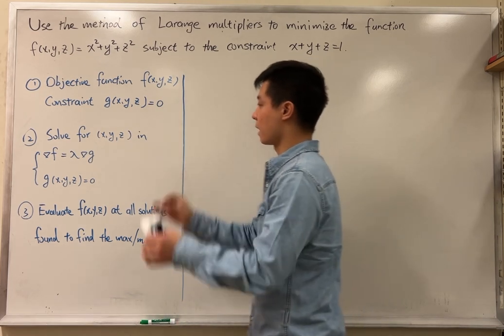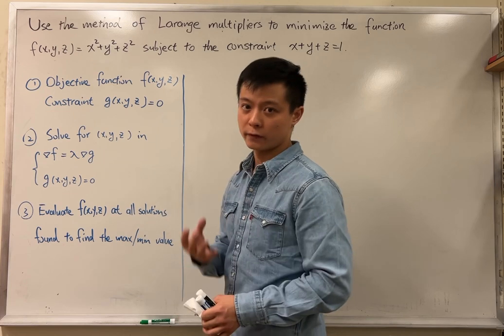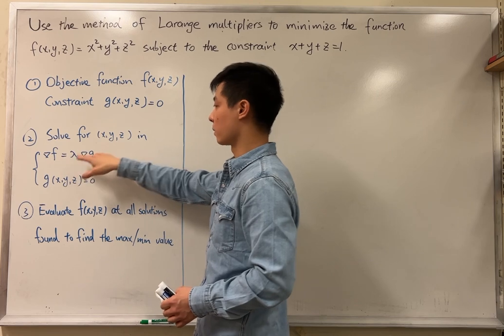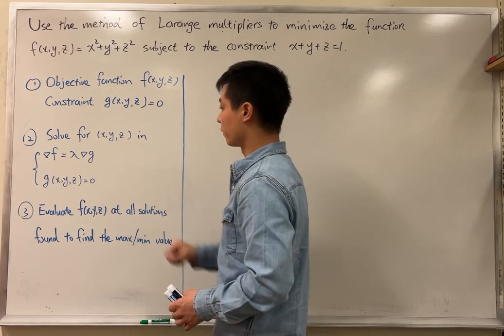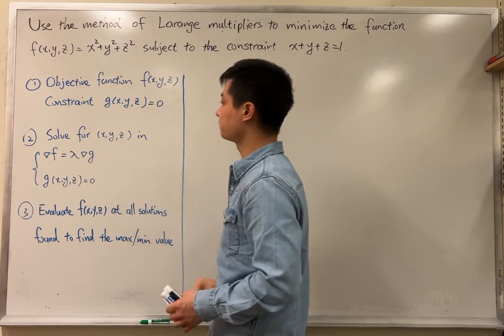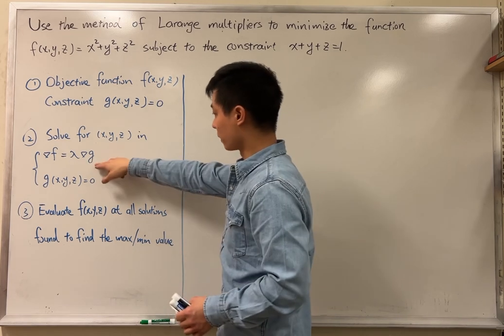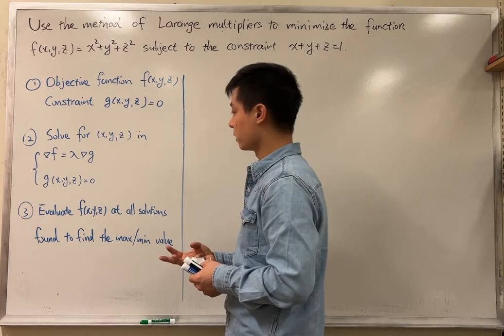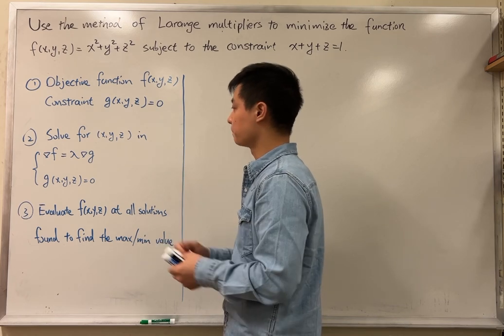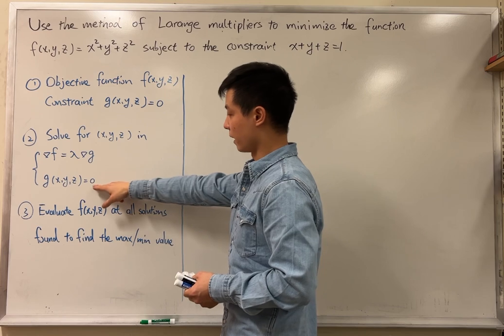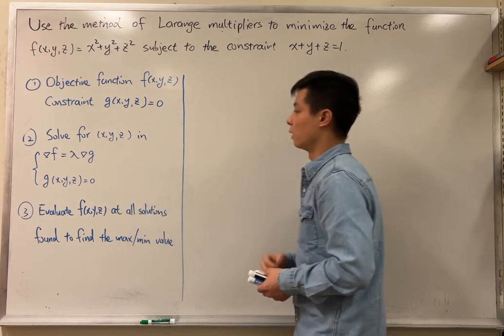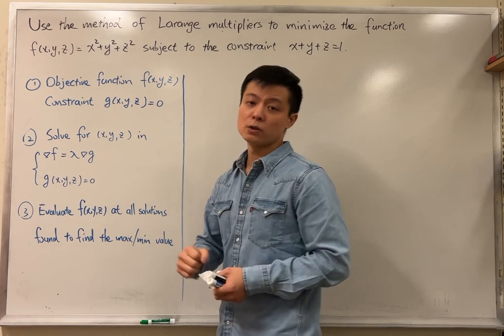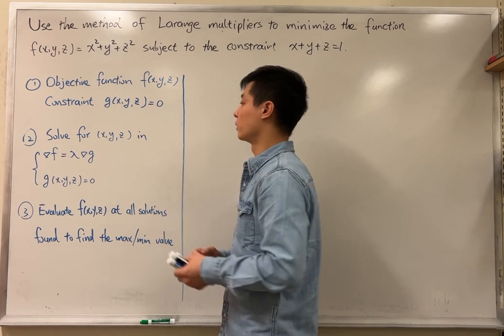Next, we're going to establish a system of equations by equating the gradient of f and lambda times the gradient of g, together with the constraint in step one. Notice that the first equation here is indeed a vector equation in three dimensions, so it's going to give you three equations. Together with the next equation, you're going to have a system of four equations in total, and in solving this system, you can expect you might have more than one set of solutions.